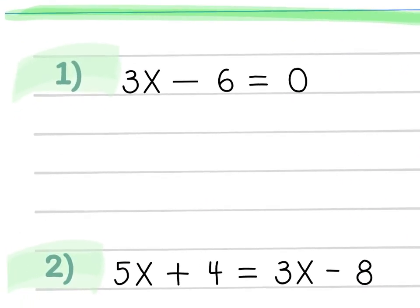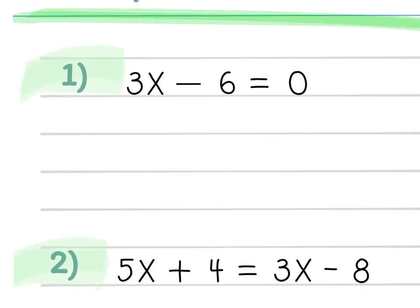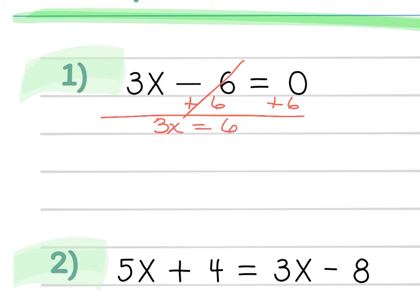Here's the first example. You probably learned this in Algebra 1 as a two-step equation because it involves two inverse operations to solve. Remember, when solving for variables we work backwards through order of operations — so I'll add or subtract first. I'm going to add 6 to both sides, which makes that cancel out, leaving 3x = 6. Divide both sides by 3 and x = 2.